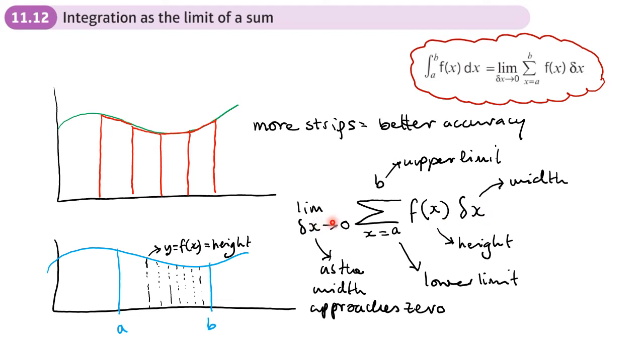And that width is getting narrower and narrower and narrower. It's approaching zero, and obviously we're going to have more and more strips. And we said more strips equals better accuracy.